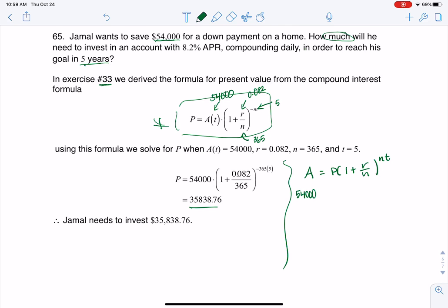So Jamal wants $54,000 in five years. He doesn't know how much he needs now. He doesn't know his principal. We know the interest rate is 0.082. Apparently he's going to get interest every day. Good for him. I wish I had that account. And he wants to put it in there for five years.